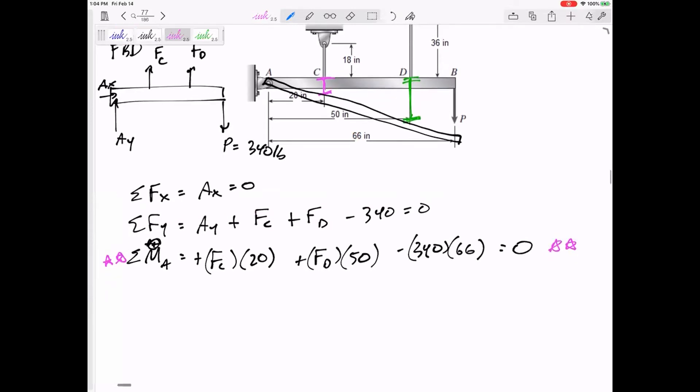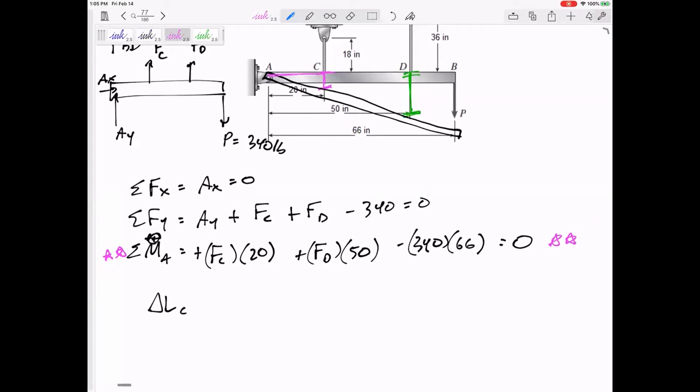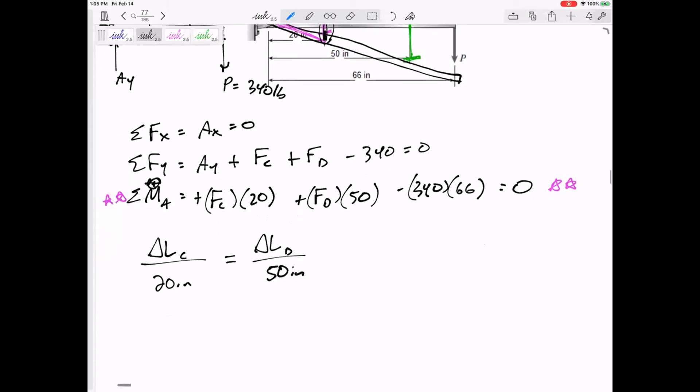What about the delta L of wire C and the delta L of wire D? Are they equal to each other? No. Do they add up to zero? No. But are they a ratio of each other? Can you see these triangles? I would say delta L over 20 inches would be the same as the delta L of wire D over 50 inches.